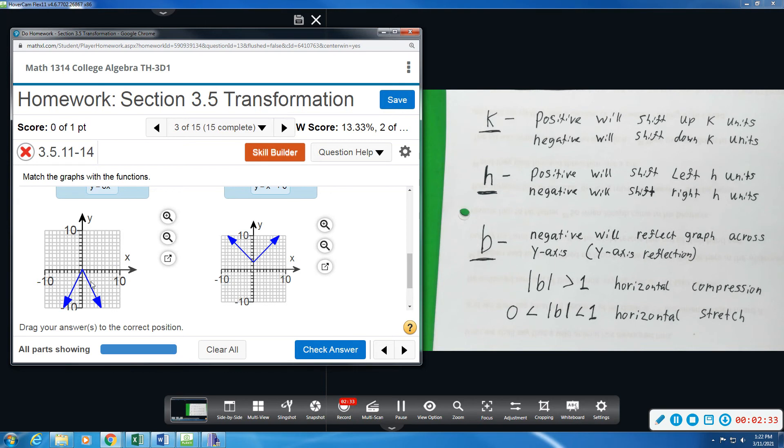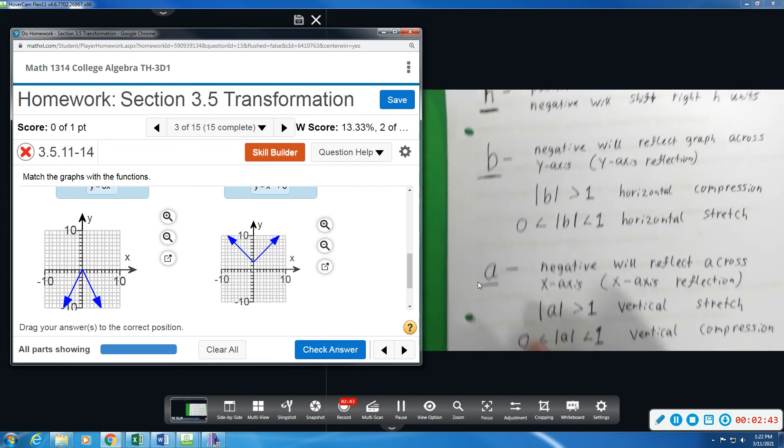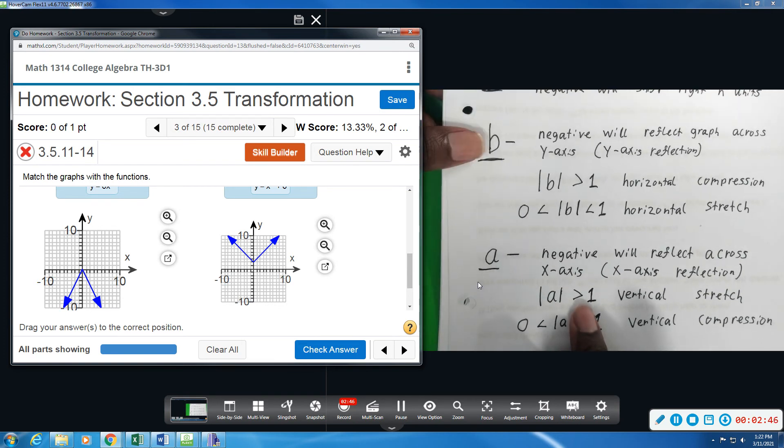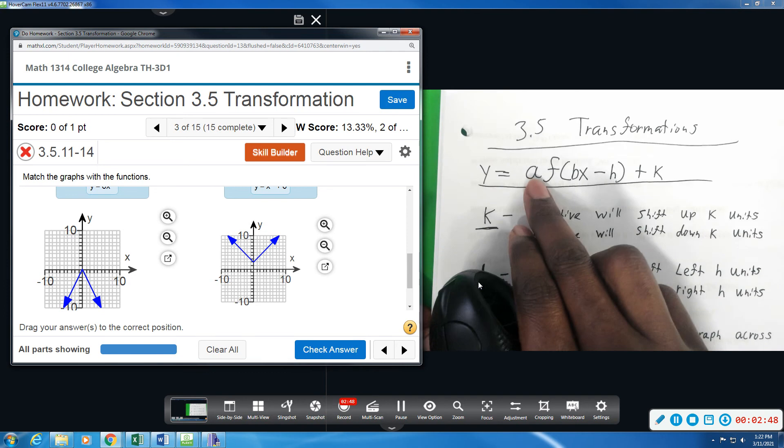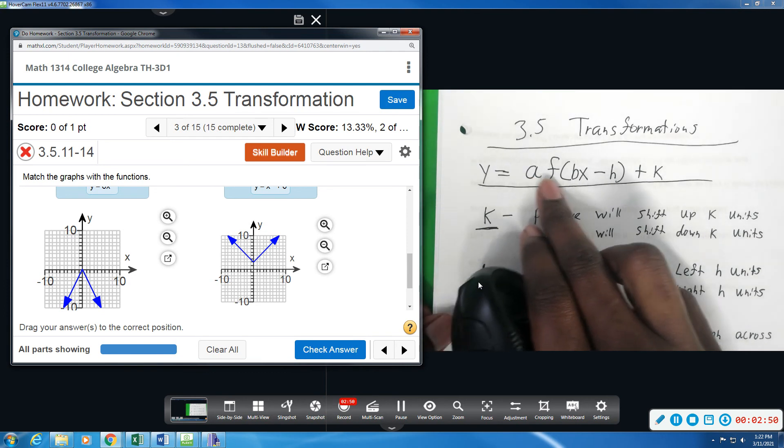So I'm believing that this will have a vertical stretch because it's a lot thinner. So I'm looking for an A value in front, greater than one, in front of the absolute value. So when I'm comparing, I want something up front, two, three, four, something like that.